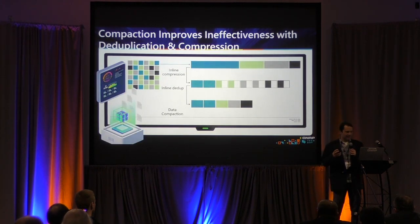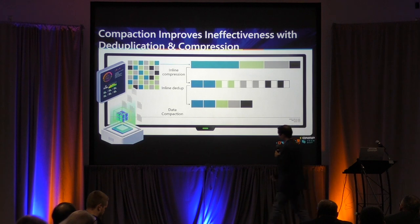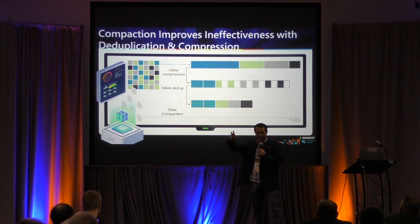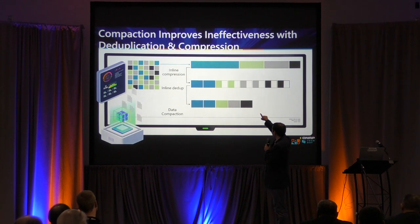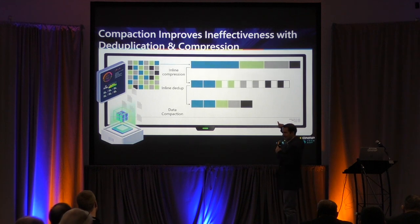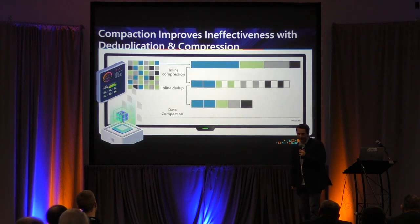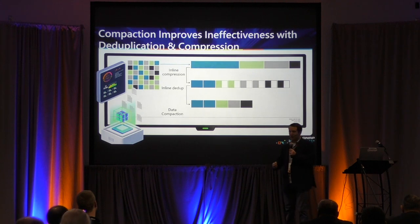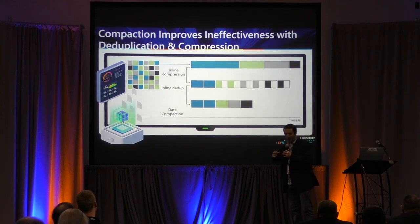Here's how our deduplication, compression, and compaction work. When you write to the NAS, the data goes into RAM. While it's in RAM you compress it — you turn the big block into a smaller compressed block. But sometimes after compression there are blank spaces between SSD blocks or HDD sectors, which is bad for performance. So next we compact. We compress, dedupe, and compact while it's in RAM before writing to the drives. That means you write less data to the drives and can read and write quicker.